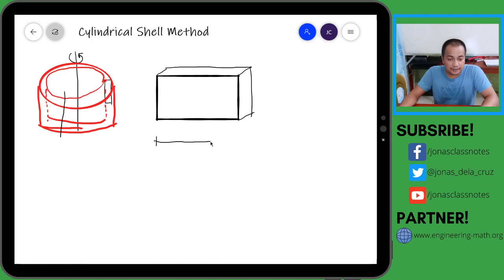Okay, this length is actually the circumference of the average of the two circles. Kasi maliit lang naman yung thickness nito - maliit lang yung thickness ng rectangular element natin.